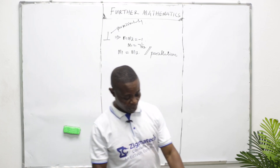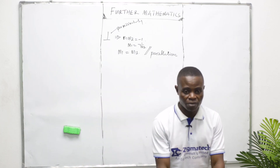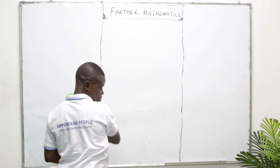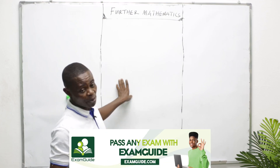Now let us look at some sample questions. A straight line passes through the points P(−1, 3). Another line passes through Q(−4, 4) and intersects the first line at the point R(K, 5), where K is a constant. If angle PRQ equals 90 degrees, find the value of K. This kind of question — all you need to do is get your points out.